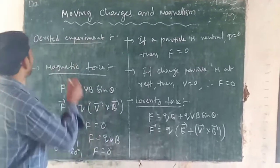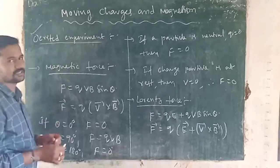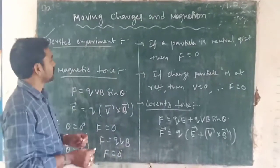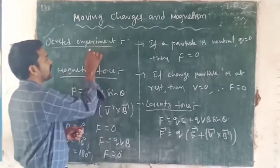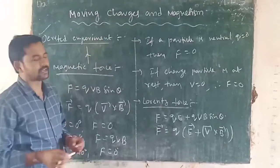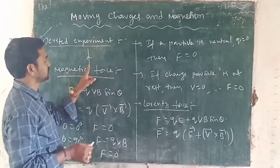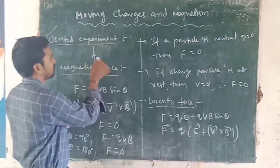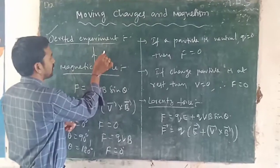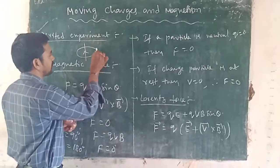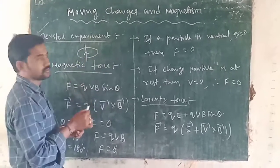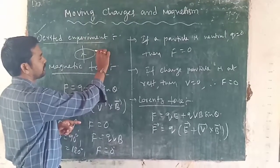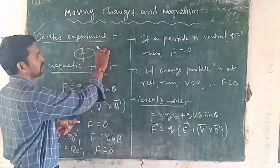That is the Oersted experiment. Oersted said that the current-carrying conductor produces a magnetic field. This is the current-carrying conductor in a particular direction. Around it, it produces a magnetic field. When you bring a magnetic needle near to it, it shows deflection.